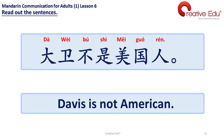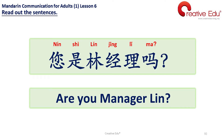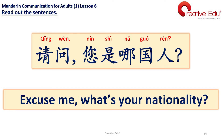Read out the sentences. 大卫不是美国人。David is not American. 大卫不是美国人。您是林经理吗？Are you Manager Lin? 您是林经理吗？请问，您是哪国人？Excuse me, what is your nationality? 请问您是哪国人？